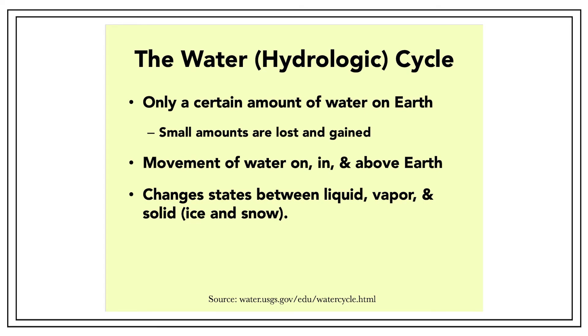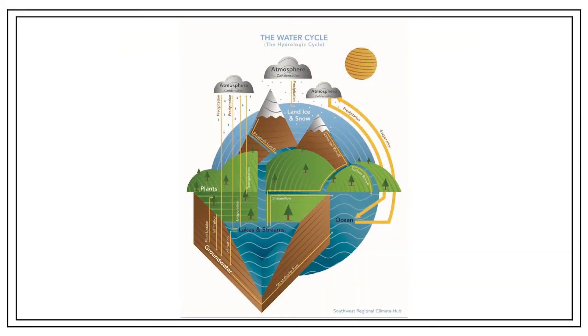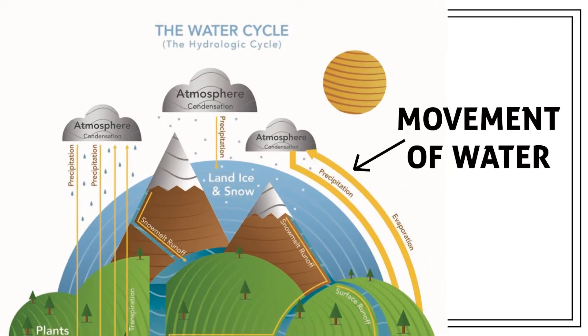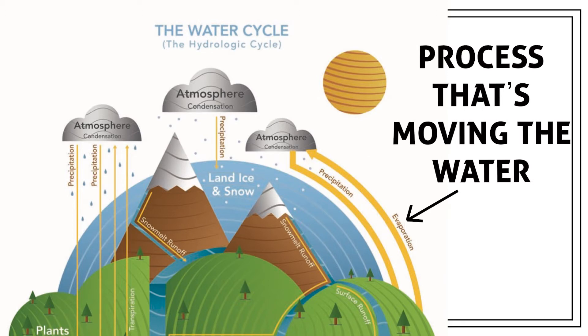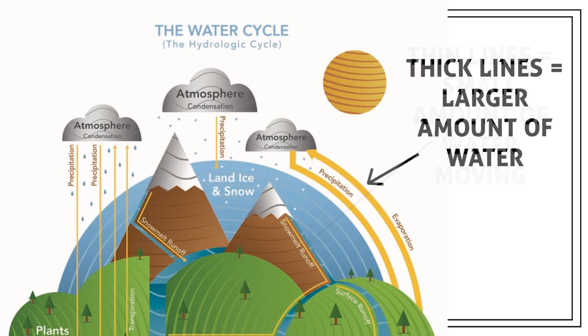Divide students into six groups, and give each group a copy of the water cycle diagram. Explain that the arrows indicate movement of water from one location to another, and they're labeled with the process that's moving the water. Thin lines indicate a small amount of water moving, and thick lines indicate a larger amount of water.